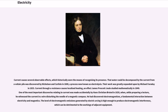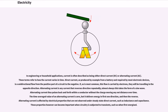Current causes several observable effects, which historically were the means of recognizing its presence. That water could be decomposed by the current from a voltaic pile was discovered by Nicholson and Carlisle in 1800, a process now known as electrolysis. Their work was greatly expanded upon by Michael Faraday in 1833. Current through a resistance causes localized heating, an effect James Prescott Joule studied mathematically in 1840. One of the most important discoveries relating to current was made accidentally by Hans Christian Ørsted in 1820, when, while preparing a lecture, he witnessed the current in a wire disturbing the needle of a magnetic compass. He had discovered electromagnetism, a fundamental interaction between electricity and magnetism. The level of electromagnetic emissions generated by electric arcing is high enough to produce electromagnetic interference, which can be detrimental to the workings of adjacent equipment.